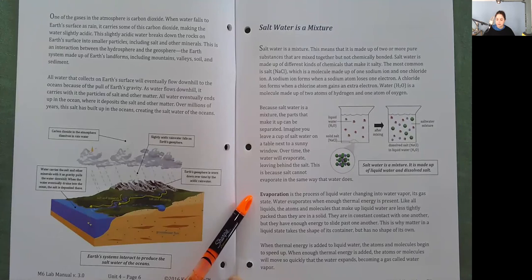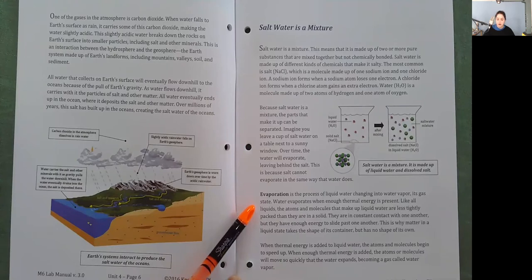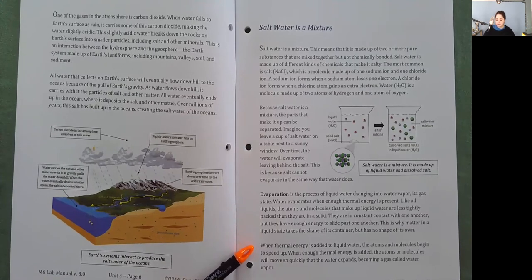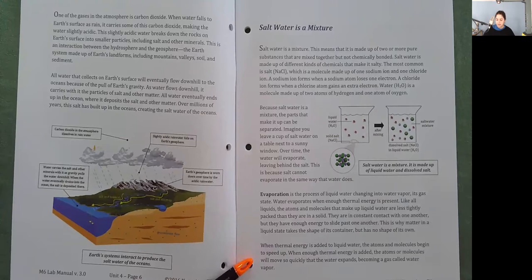Evaporation is the process of liquid water changing into water vapor, its gas state. Water evaporates when enough thermal energy is present. The atoms and molecules that make up liquid water are less tightly packed than in a solid — they are in constant contact but have enough energy to slide past one another. When thermal energy is added, the atoms and molecules begin to speed up until the water expands, becoming a gas called water vapor.